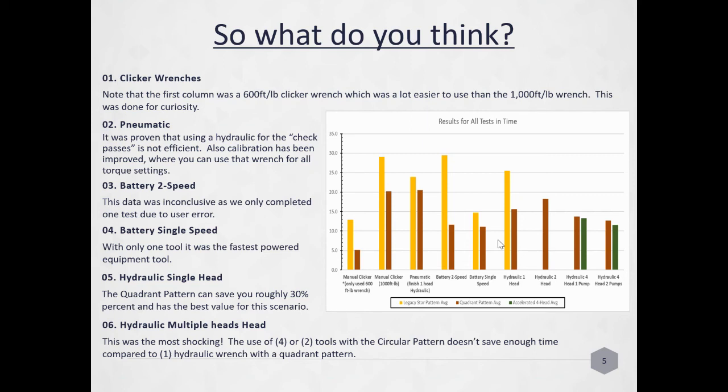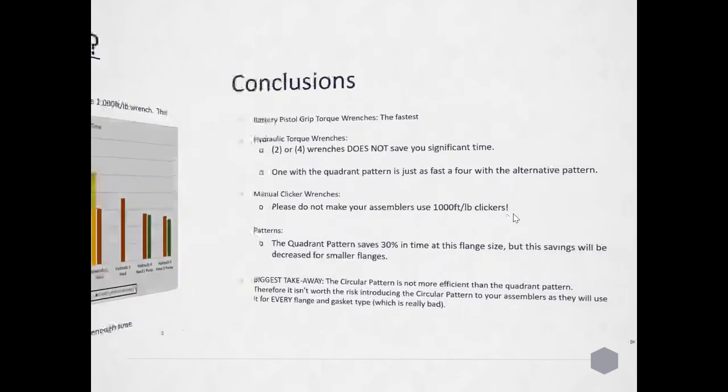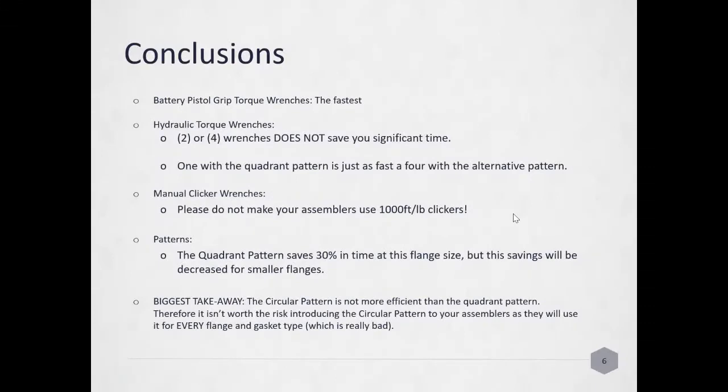Our conclusions: battery pistol grip torque wrenches are the fastest. Hydraulic torque wrenches two and four does not give you significant time savings. One wrench with a quadrant pass is just as fast as four with the alternative circular pass. The circular pattern isn't more efficient than the quadrant pattern in this case. Therefore, it wasn't worth the risk of introducing the circular pattern to your assemblers as they will use it for every flange and gasket type, which could be really bad.